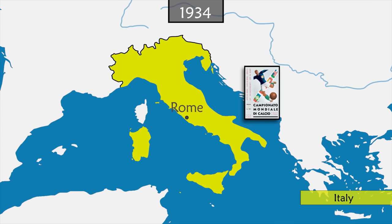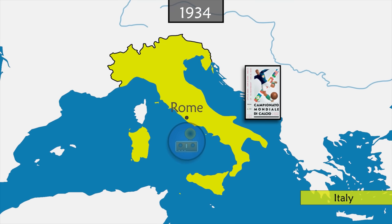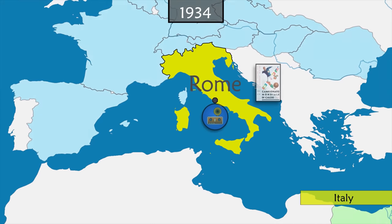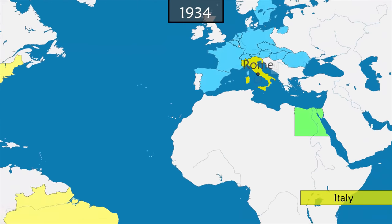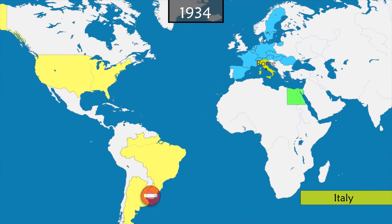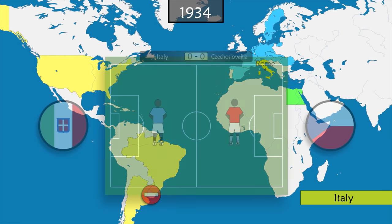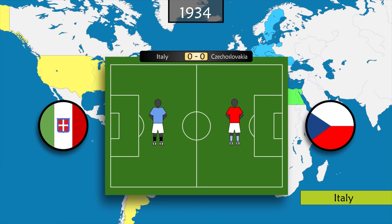Four years later, it's the turn of Mussolini's fascist Italy to host the World Cup — the first to be broadcast live on the radio. Uruguay chooses not to participate in response to the lack of interest shown by European countries for its cup. In the final, Italy wins against Czechoslovakia two to one.